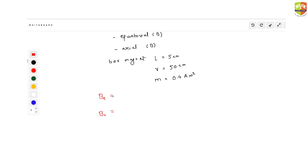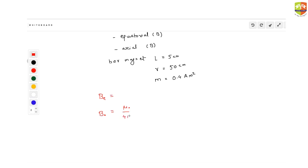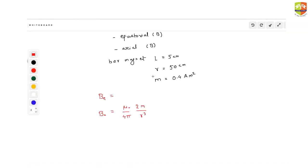So you need to find out what is B axial and B equatorial. The formula for axial magnetic field is mu naught by 4 pi times 2m by r cubed. It doesn't depend on length, right? We are ignoring length compared to the distance where we are finding the magnetic field. Equatorial is this divided by 2. When you substitute all the values, mu naught by 4 pi is 10 raised to power minus 7, times 2 into magnetic moment, which is 0.4, divided by 0.5 into 0.5. So you will get this as 6.4 into 10 raised to power minus 7 Tesla.